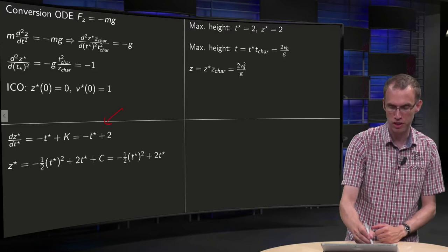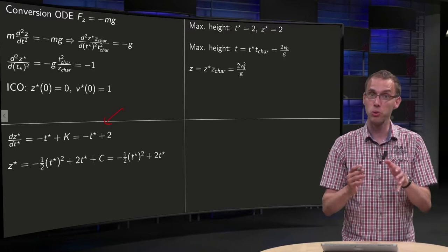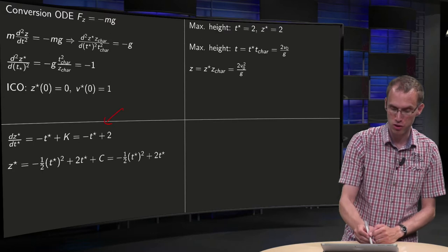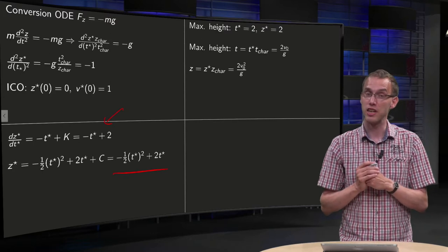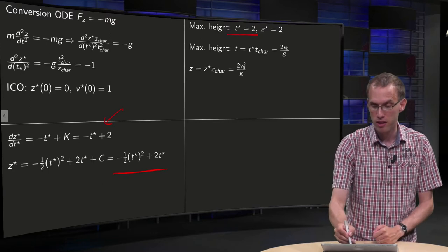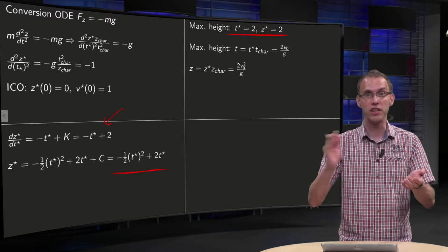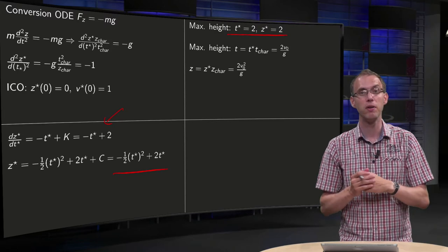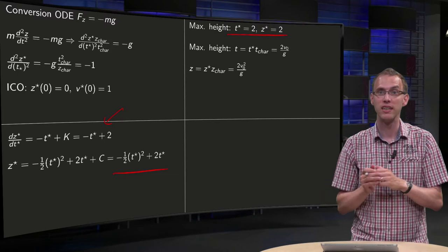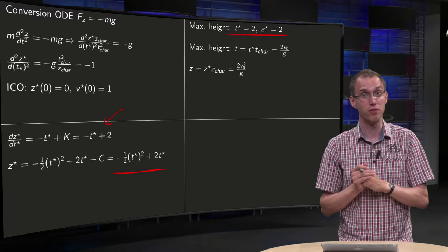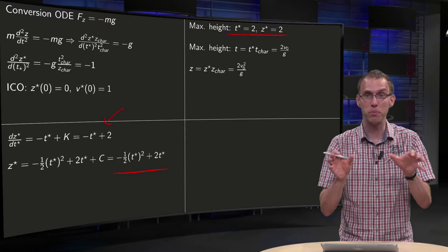So when do you reach your maximum height? That is of course if your velocity is zero, so t* equals 2. And if t* equals 2, you can see from here that your z* equals 2 as well. So you see that in dimensionless quantities your t* and z* at the requested time become of order unity and that's exactly what you want with this type of non-dimensionalization.